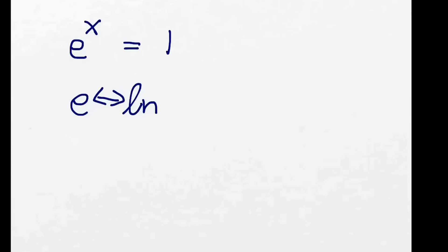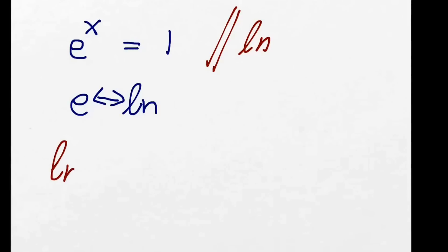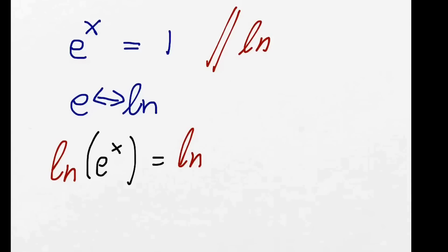So let's see how this works. We have e, and therefore we take both sides ln. So we've got ln(e^x) equals ln(1). We know that ln and e cancel each other out. So we've got x equals ln(1), and when we put that into the calculator it gives us 0.